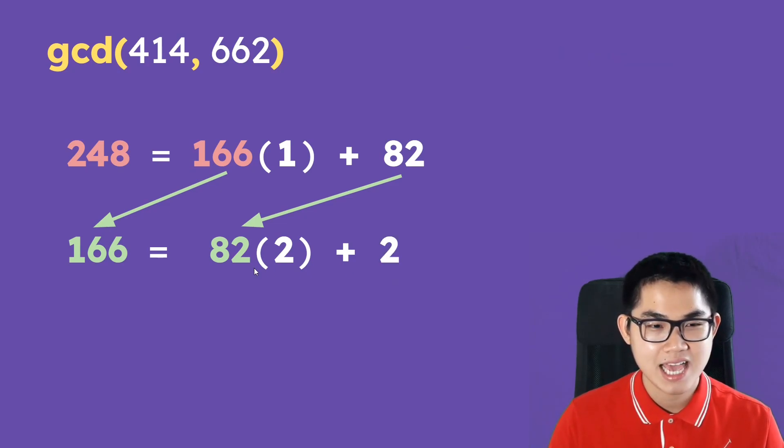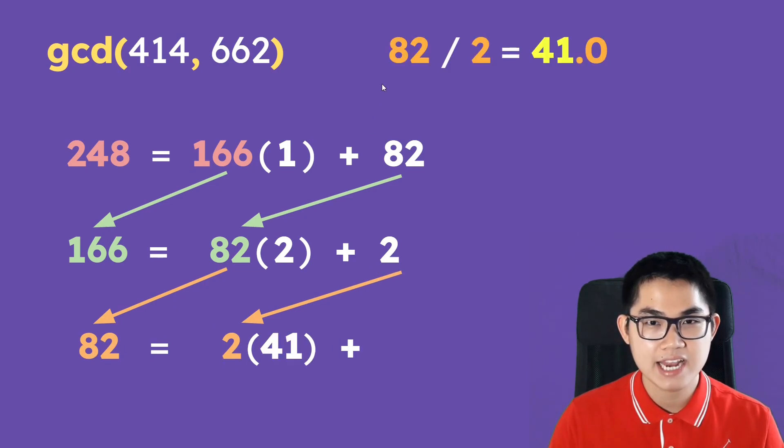And again, take 82, put it down here. And then 82 divided by 2 is equal to 41.0, so take 41, put it into the bracket, and then find the remainder, and turns out that the remainder will be 0.